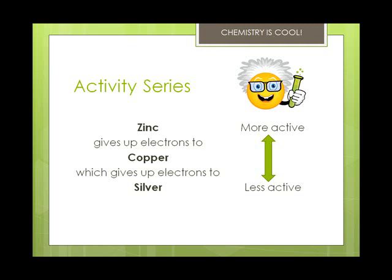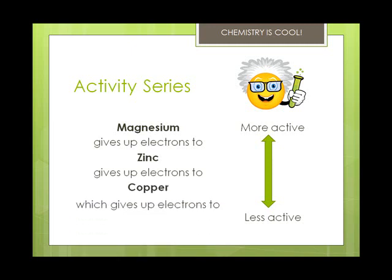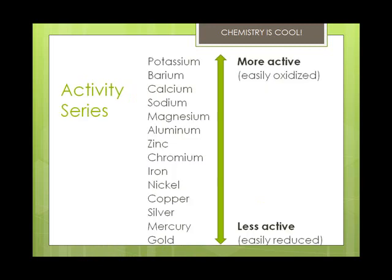The result is called an activity series. Experimentally, we've determined that zinc, copper, and silver can be placed in order of their activity. When you combine magnesium with zinc nitrate, the magnesium will be oxidized to form Mg²⁺ ions, so magnesium is more active than zinc. Zinc is more active than copper, and copper is still more active than silver. All of the reactions in this section have been single-exchange reactions, where the more easily oxidized metal displaces the other metal as an ion.